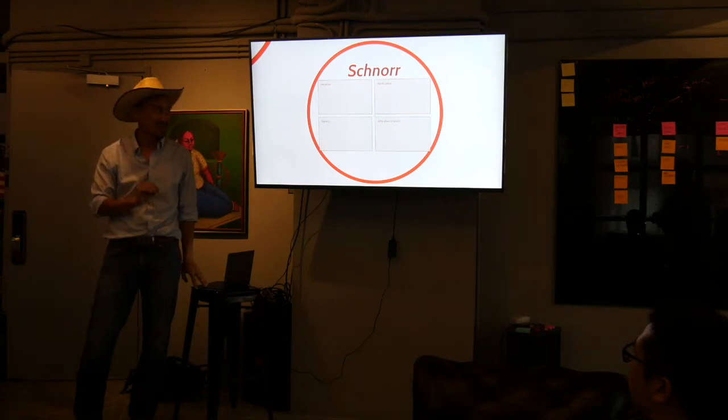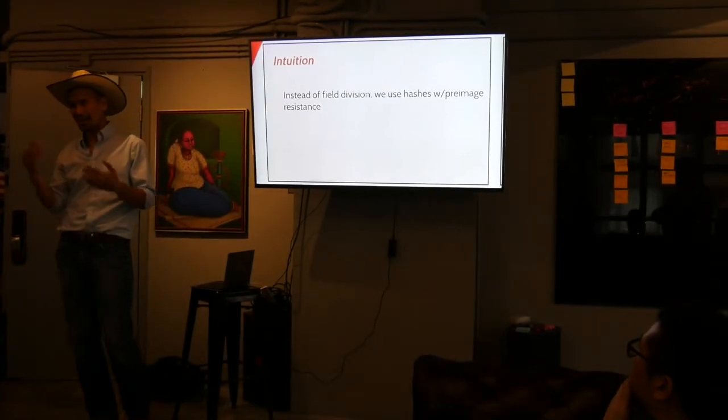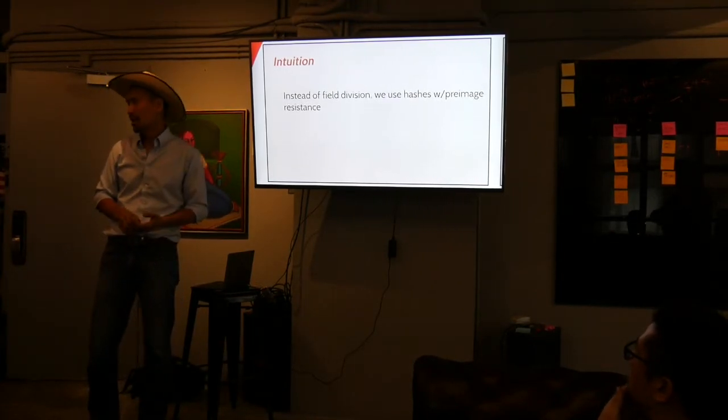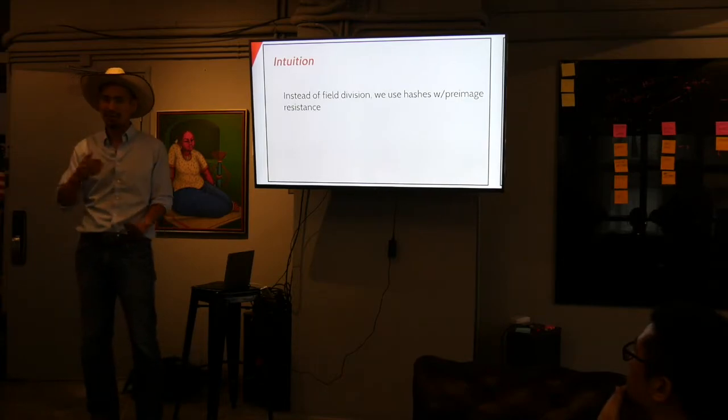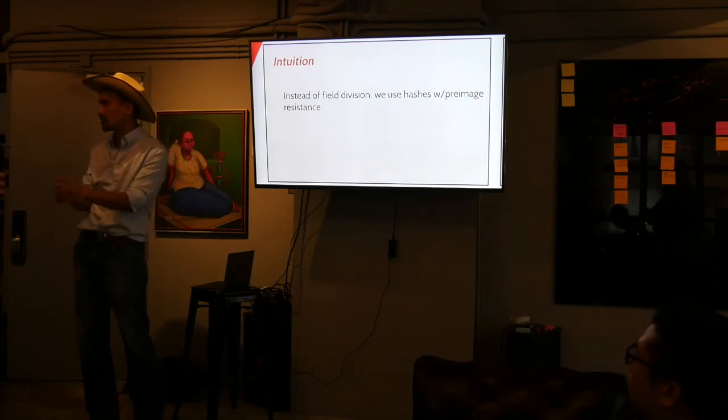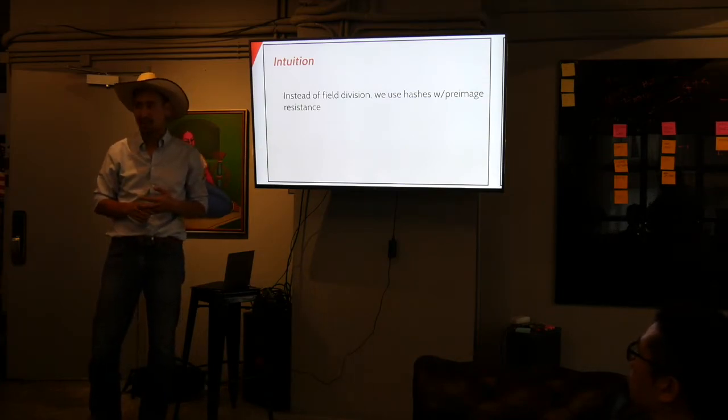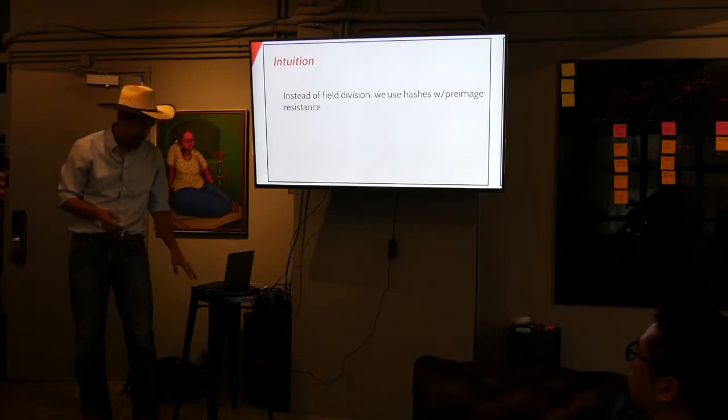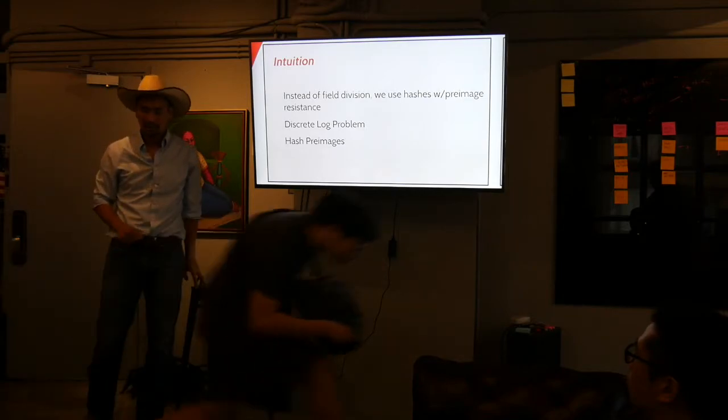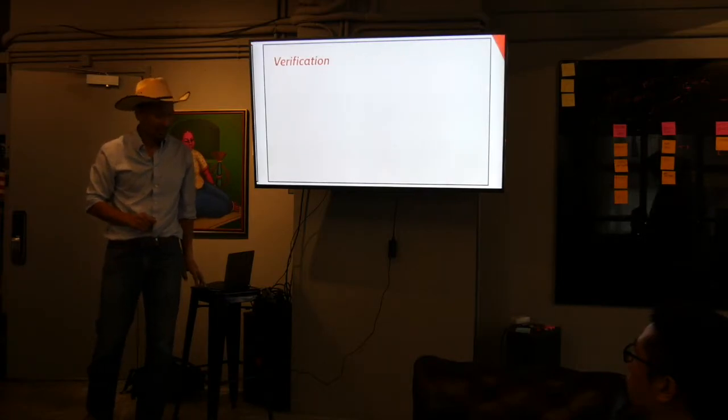Which, to me, to this day, the fact that you can do that with this sort of zero-knowledge proof is still kind of mind-blowing. But that's how ECDSA works. Anyway, hopefully that wasn't too fast. Let's now talk about Schnorr. Because Schnorr is very similar to ECDSA, except it's got a couple of differences. So, first, instead of using field division, which is actually kind of a very expensive operation from a computing standpoint, we're going to use hashes. And hashes specifically that have pre-image resistance. That just means that it's very difficult to figure out the pre-image of the hash.